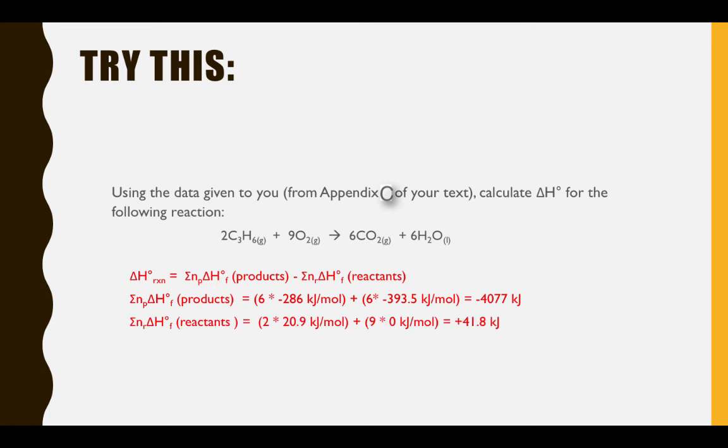Now let's look at the sum of the delta H's of formation of the reactants. Here we have two moles of C3H6, so I multiply that enthalpy of formation by two, and nine moles of oxygen, but notice oxygen is already in its standard state, so it has an enthalpy of formation of zero. This gives me 41.8 kilojoules, meaning 41.8 kilojoules must be absorbed to break the bonds in the reactants.